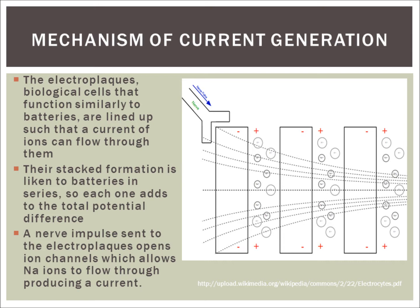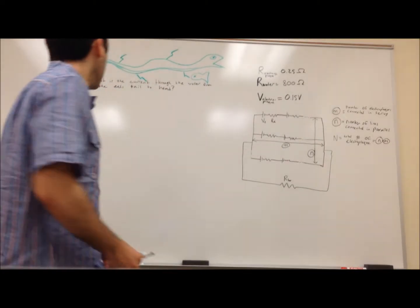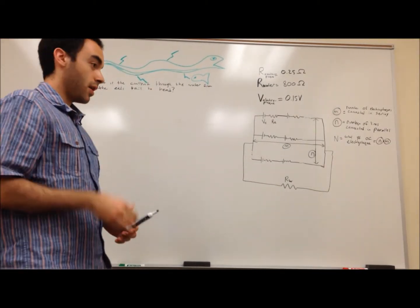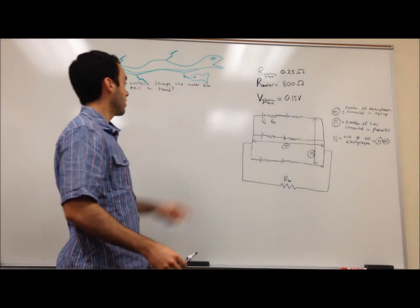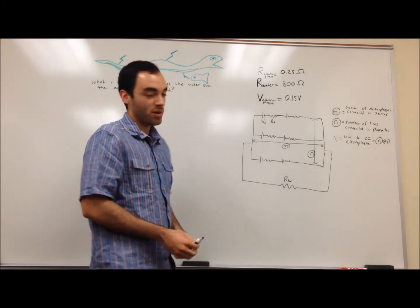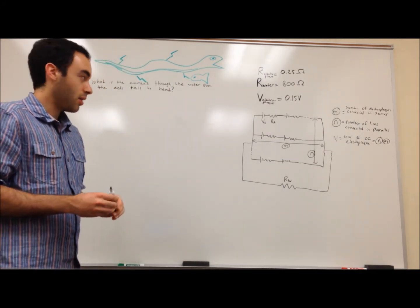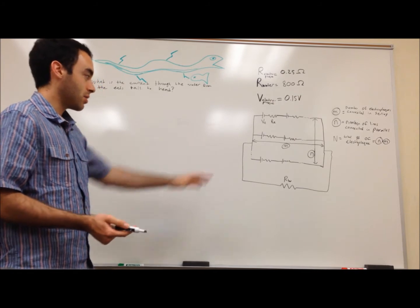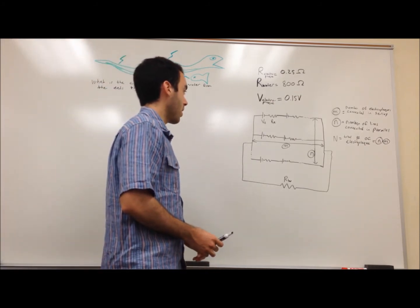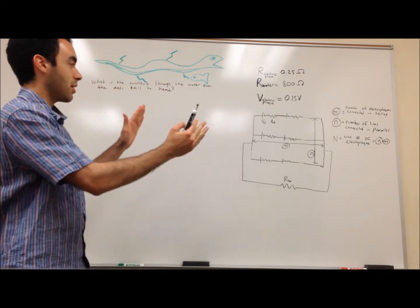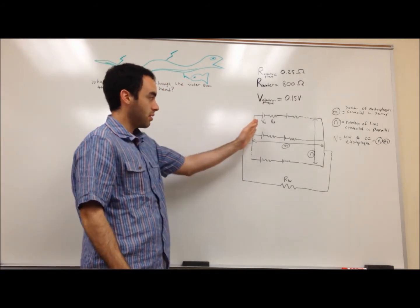To understand how electric eels produce electricity, I'd like to do an example problem using what we've learned this semester. Alright, so the example problem I want to work on is how to calculate the total current generated from the tail of the eel to the head of the eel. And the way we're going to do this is by modeling the electroplaque system that we saw in the slideshow as a circuit. So how we're going to do this is we're going to have electroplaques which are stacked right on top of each other and that can be modeled as electroplaques in series.